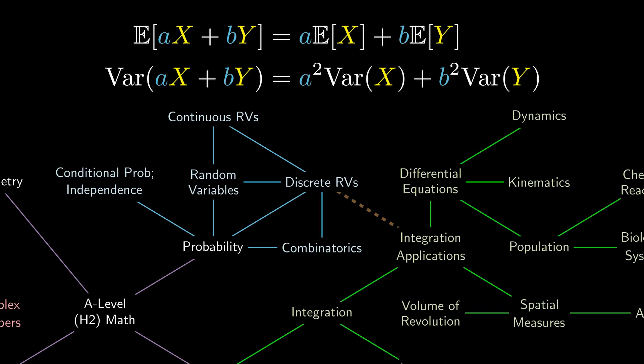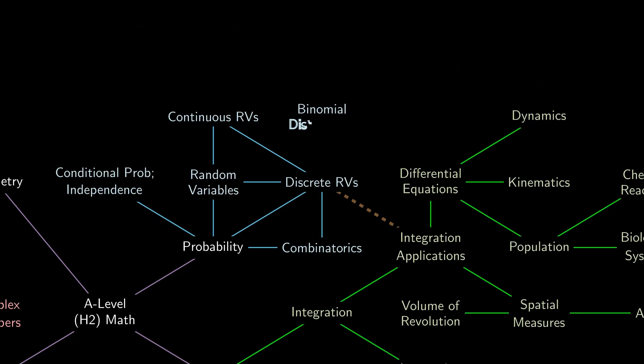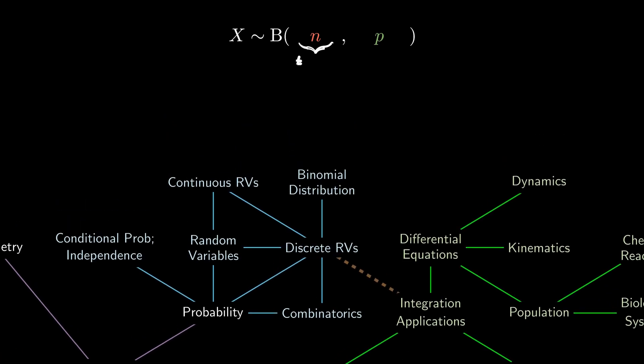A really useful example of a discrete random variable is the binomial distribution, where we count the number of successes out of n trials with probability of success p. We can use our probability techniques to make sense of the formulas involving the probability, expectation, and variance of a binomial distribution.